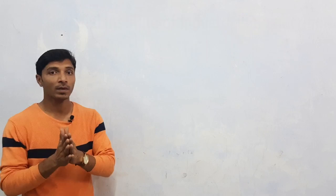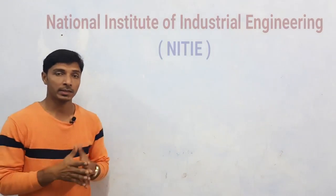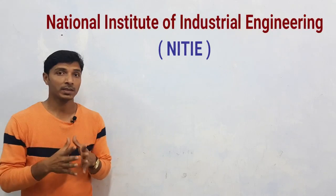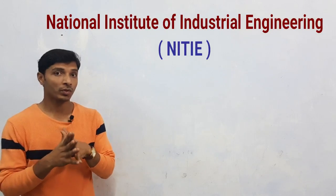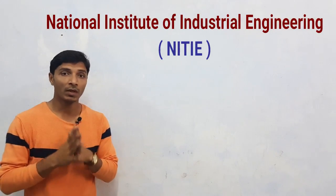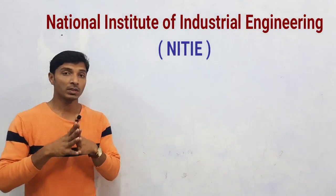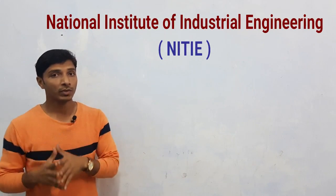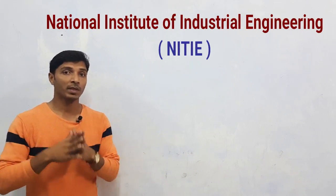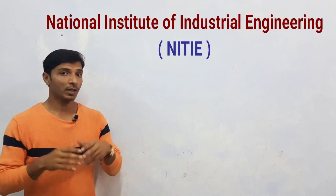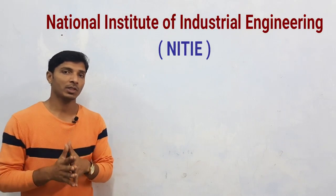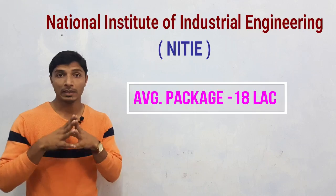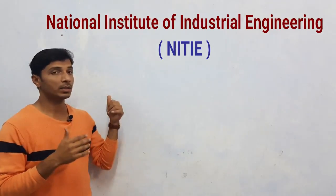The next choice is MBA. After qualifying GATE, you can go for MBA at NITIE — National Institute of Industrial Engineering. If your GATE rank is below 700 to 800 (meaning a very good rank and high score), you can get admission there. You can pursue a post graduate diploma in project management, industrial engineering, and manufacturing. The duration is 2 years, and after completing this diploma, you will get a minimum package of around ₹18 lakh per annum.